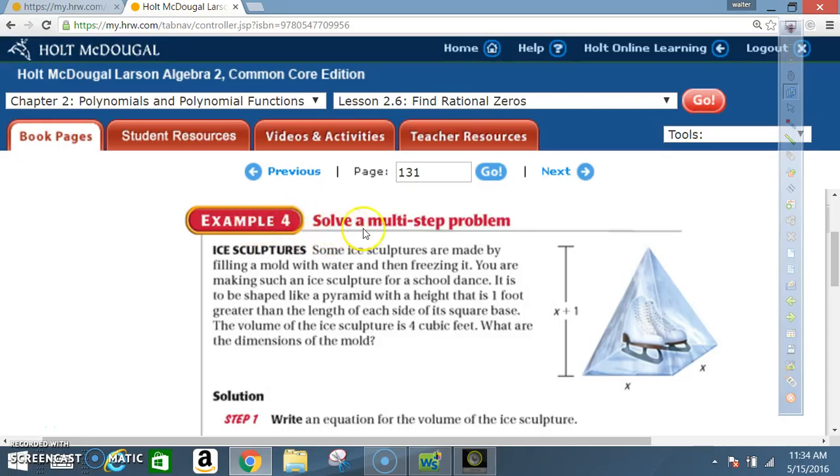Okay, example four, solve a multi-step problem. Ice sculptures. Some ice sculptures are made by filling a mold with water and then freezing it. You are making such an ice sculpture for a school dance. It is to be shaped like a pyramid with a height that is one foot greater than the length of each side of its square base. The volume of the ice sculpture is four cubic feet. What are the dimensions of the mold?